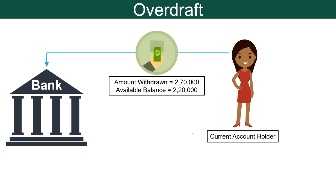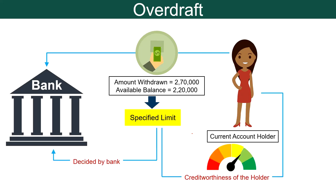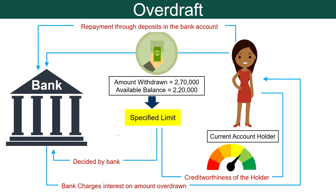The holder can withdraw only up to a specified limit, which is decided by the bank and depends upon the credit worthiness of the borrower. Further, the holder needs to make deposits in the concerned bank account in order to repay the debt. The bank charges interest on the amount overdrawn, and it is repayable on demand, i.e., the bank may ask you any time to repay the funds.